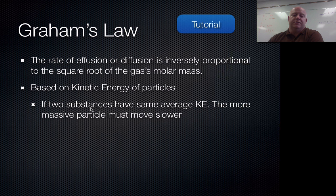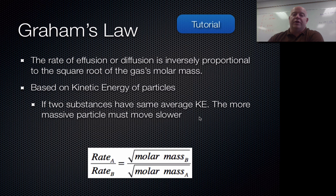So what we say is if two substances have the same average kinetic energy, the more massive particle must move slower. Now, we're assuming that these two substances are going to be at the same temperature because if they're in the same room, in the same situation, in the same environment, they'll be at the same temperature, which means they have the same average kinetic energy. So that means the heavy one moves slow and the lighter one moves faster.